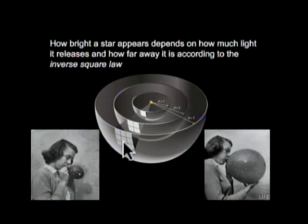So in the outermost shell there's less photons, less light arriving in each one of those squares than in this shell and then in this shell.